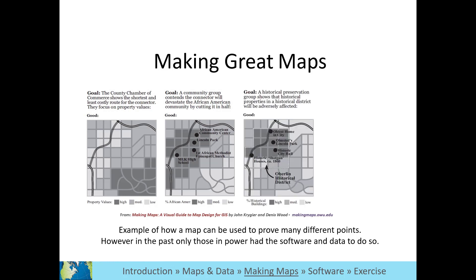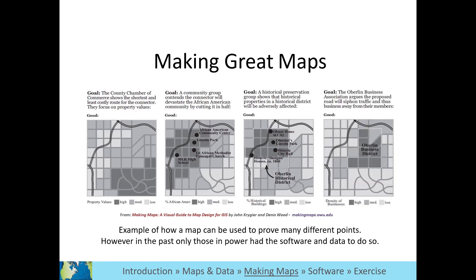In the third map, the historical preservation group shows that this highway connector will run very close to the historic buildings and could adversely affect them. Finally, the Business Association also doesn't like the location of this connector and uses data on their map to show that traffic would be diverted away from the business district.